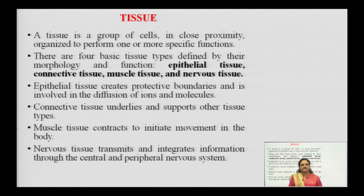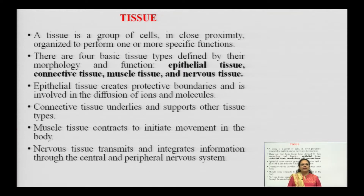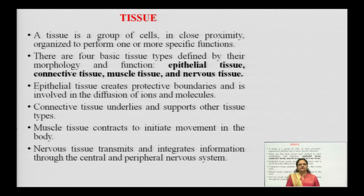The four different types of tissues are: epithelial tissue, connective tissue, muscular tissue, and nervous tissue. Epithelial tissues create a protective boundary and are involved in diffusion of various ions, sometimes cations and anions, and small molecules such as proteins, peptides, and smaller peptide structures. Connective tissue functions to underlie and support, providing a protective supportive mechanism to other tissue types.